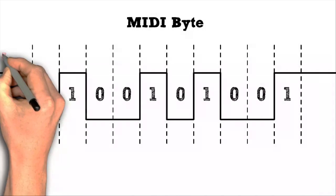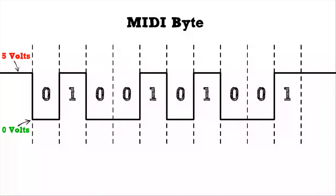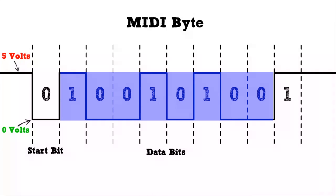Now let's look at a byte of MIDI data. A MIDI signal is a digital wave that varies between 5 volts and 0 volts. We'll refer to the 5-volt signal as high and the 0-volt signal as low. In digital electronics the high signal is read as a 1 while the low signal represents a 0. When the MIDI system is not sending a message it keeps the line in the 5-volt state. When the instrument is ready to send a message it will drop the line to 0 volts — this is called a start bit, and it tells the receiving instrument to get ready for a message. The instrument will then transmit eight bits of data down the line.